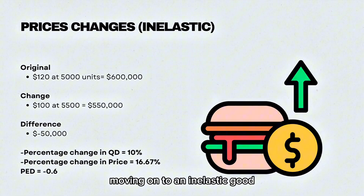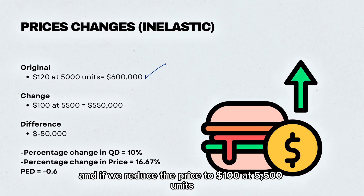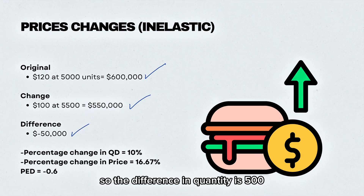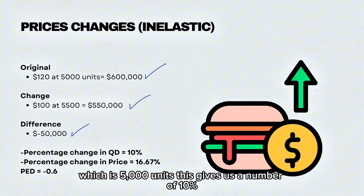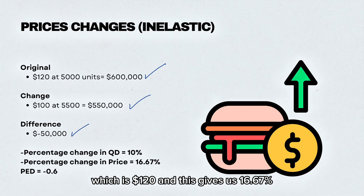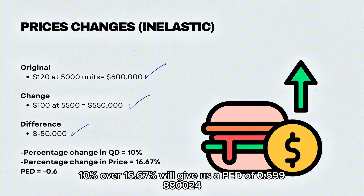Moving on to an inelastic good, doing the same calculation as before. At the original price of $120 and 5,000 units, that gives $600,000 in total revenue. If we reduce the price to $100 at 5,500 units, that gives revenue of $550,000 — a difference of minus $50,000. The difference in quantity is 500 divided by the original 5,000 units, giving 10%. The difference in price is $20 divided by the original $120, giving 16.67%. So 10% divided by 16.67% gives a PED of approximately 0.6.